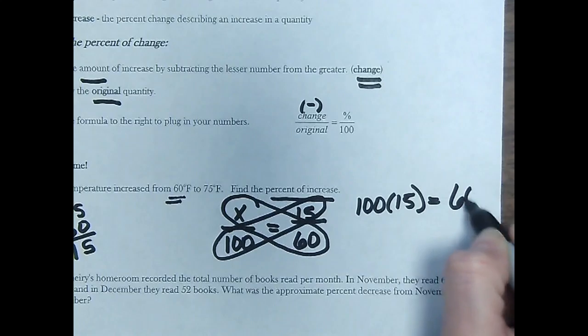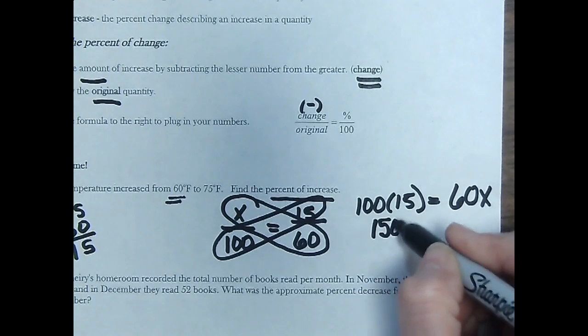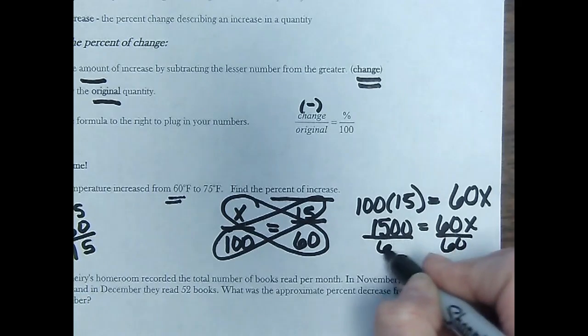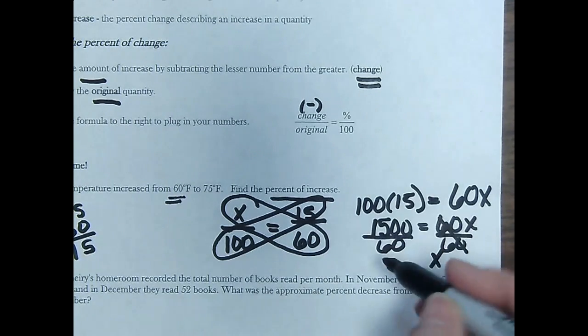Scoop my paper over. Okay, so 15 times 100 is 1,500. And then we're going to divide both sides by 60 to solve for x. And you may use a calculator here. 1,500 divided by 60 gives me 25.